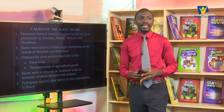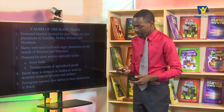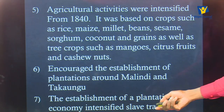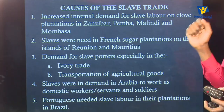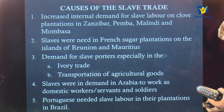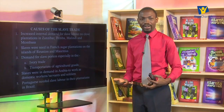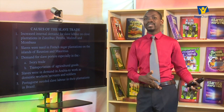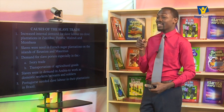The causes of the intensification of slave trade include the following. Number one, there was increased internal demand for slave labor on clove plantations in areas like Zanzibar, Pemba, Malindi, and Mombasa. Slave trade came back with the coming of the Omani Arabs and the establishment of plantations by Said Said. The first reason was increased internal demand for slaves to provide labor on those clove plantations.